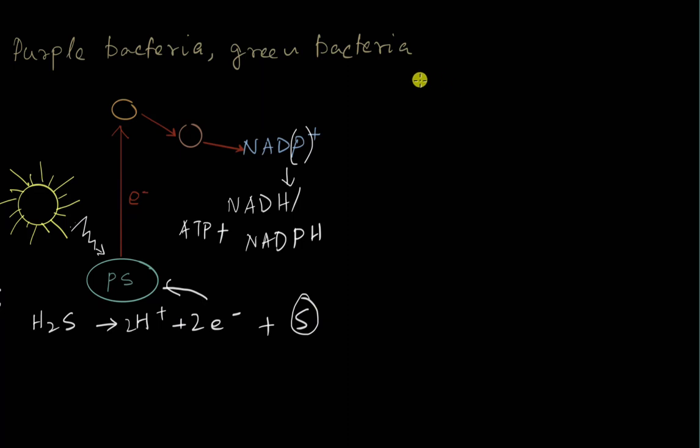So since no oxygen is released, this type of photosynthesis is called anoxygenic photosynthesis. And most often the electron donor in this case is hydrogen sulfide but sometimes there are other electron donors in some bacteria like for example hydrogen could be an electron donor, ferrous ions, thiosulfate ions or even some organic molecules. A lot of things but not water.